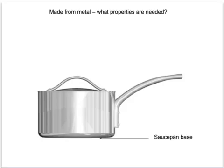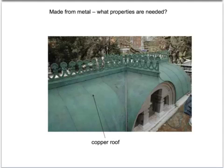This saucepan has a steel base. What properties are needed? It needs to be a good conductor of heat and also have a high melting point. This roof is made of copper. What properties would that need? It needs to be malleable because it's been shaped in this curved fashion, and it also needs to have a low reactivity with water.